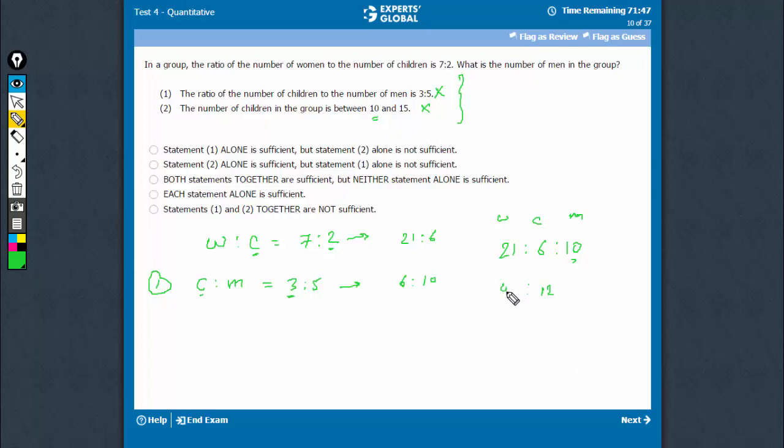So, if 12 comes here, it has to be 42 and this has to be 20. Question is asking, how many men? The answer is 20. So, combining works, the answer is option C.